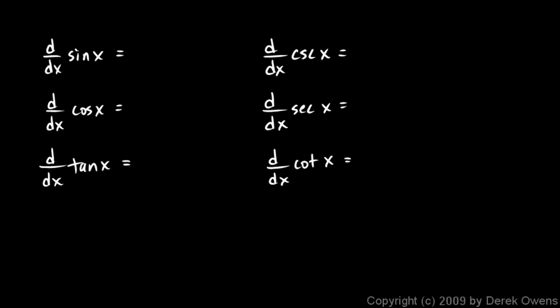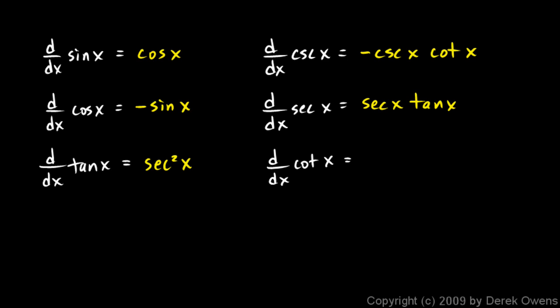Let's write a summary of everything. The derivative of sine x is cosine x. The derivative of cosine x is negative sine x. The derivative of tangent x is secant squared x. The derivative of cosecant x is negative cosecant x cotangent x. The derivative of secant x is secant x tangent x. And the derivative of cotangent x is negative cosecant squared x. These show up a lot — it's worth committing them to memory, though you can always re-derive them quickly using the quotient rule.